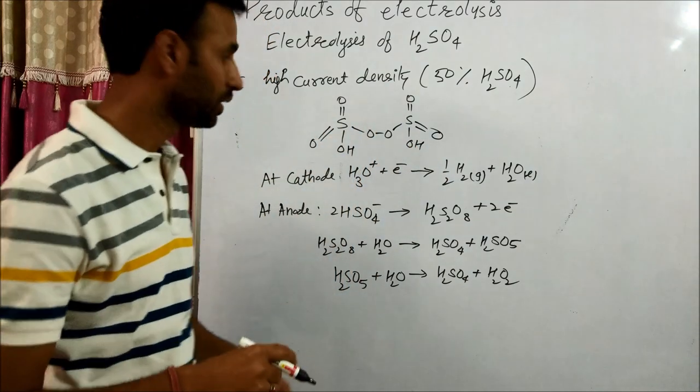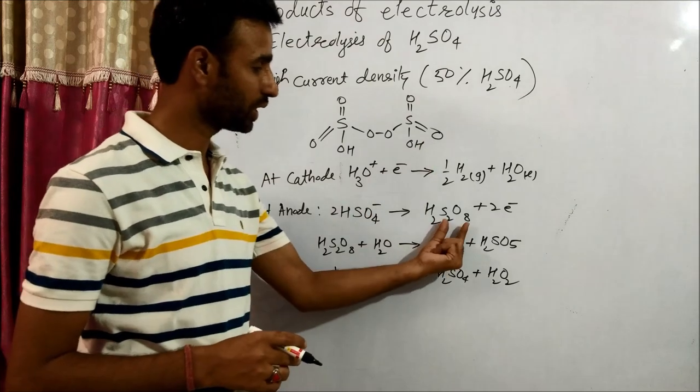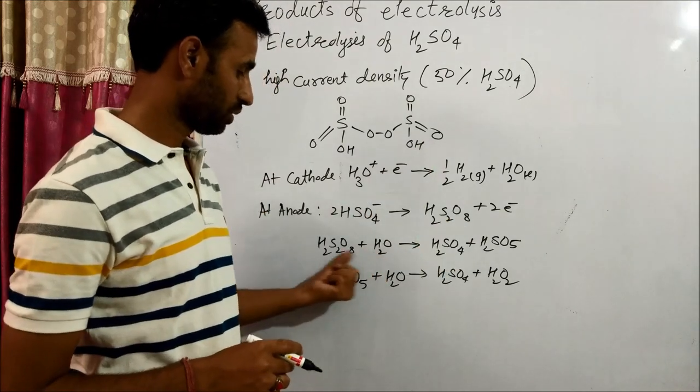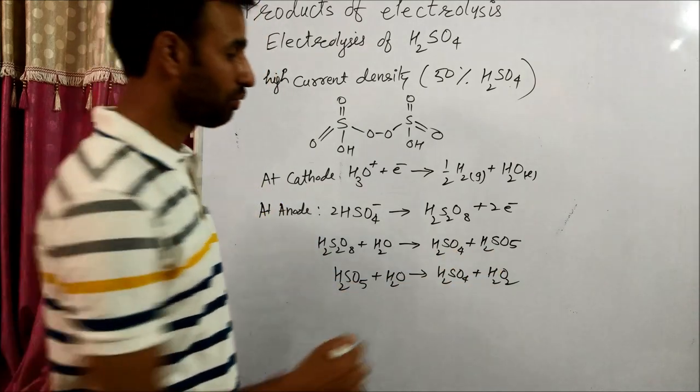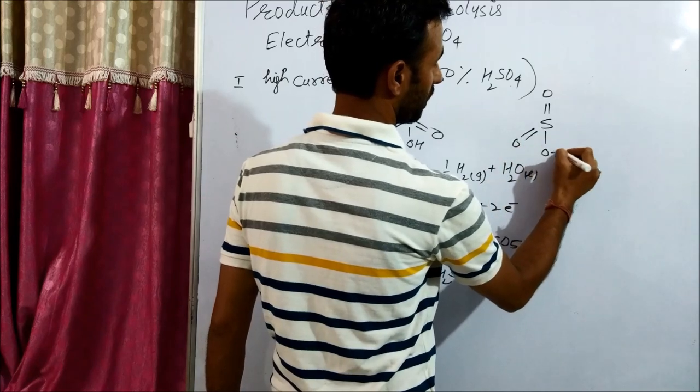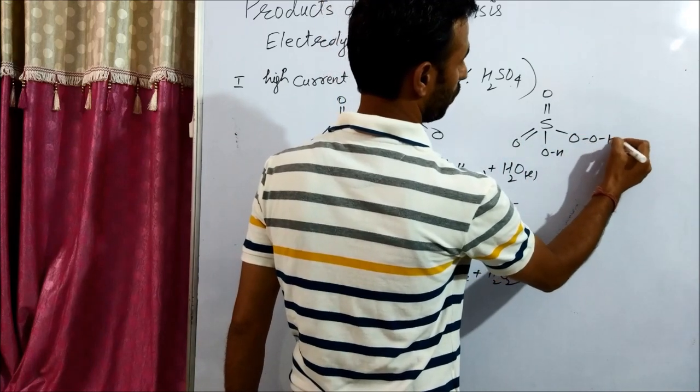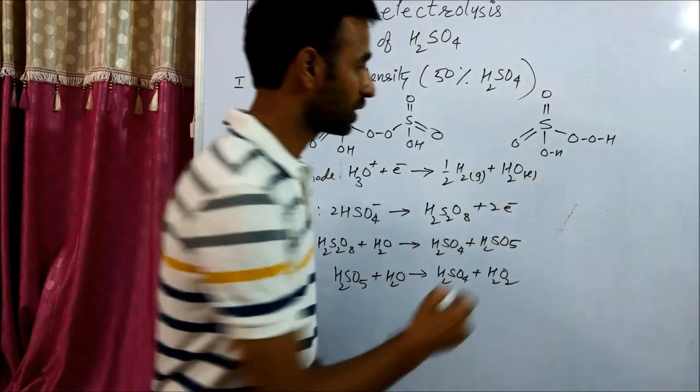The structure is like H2S2O8. This is peroxo disulfuric acid, also known as Marshall's acid. And when it is treated with water, it will give H2SO4 and H2SO5. This H2SO5 is peroxo monosulfuric acid, also known as Caro's acid.